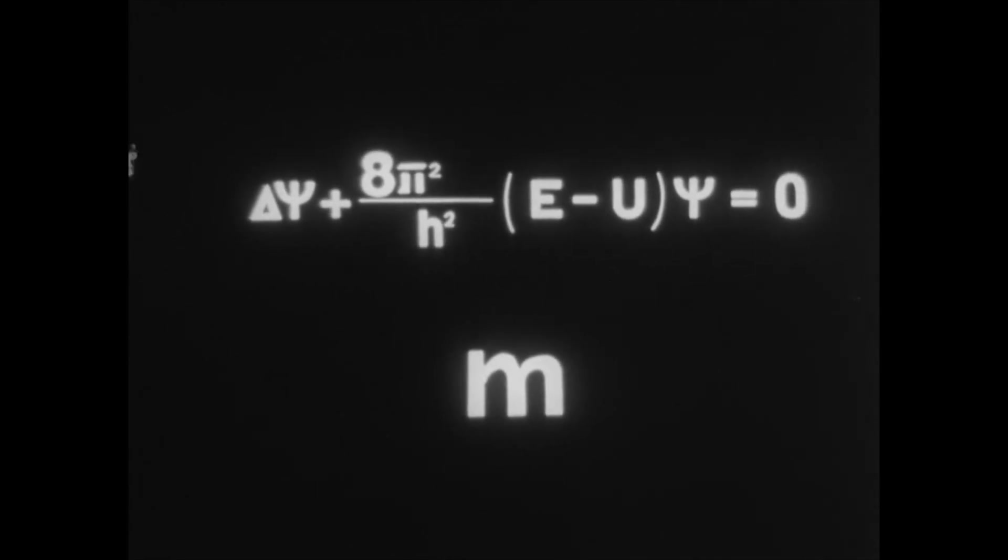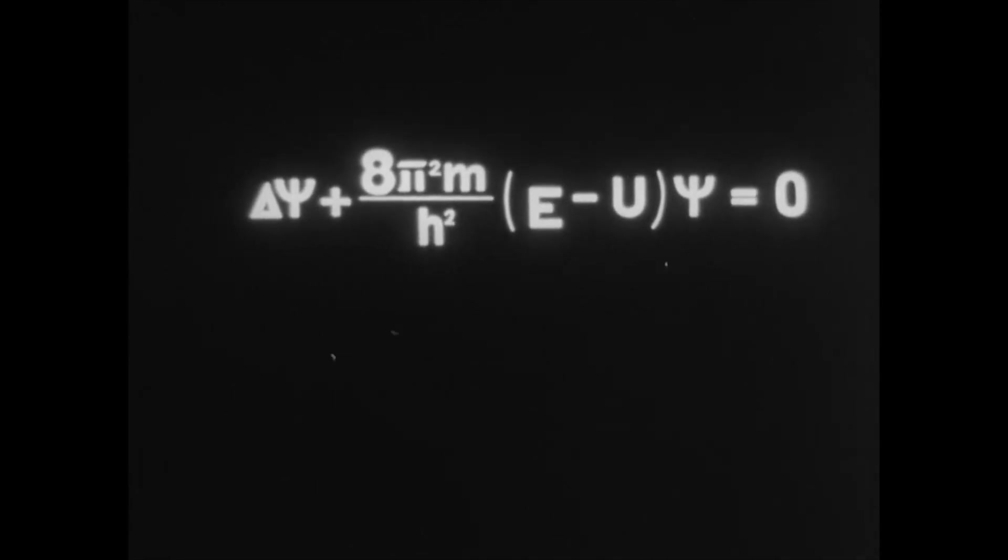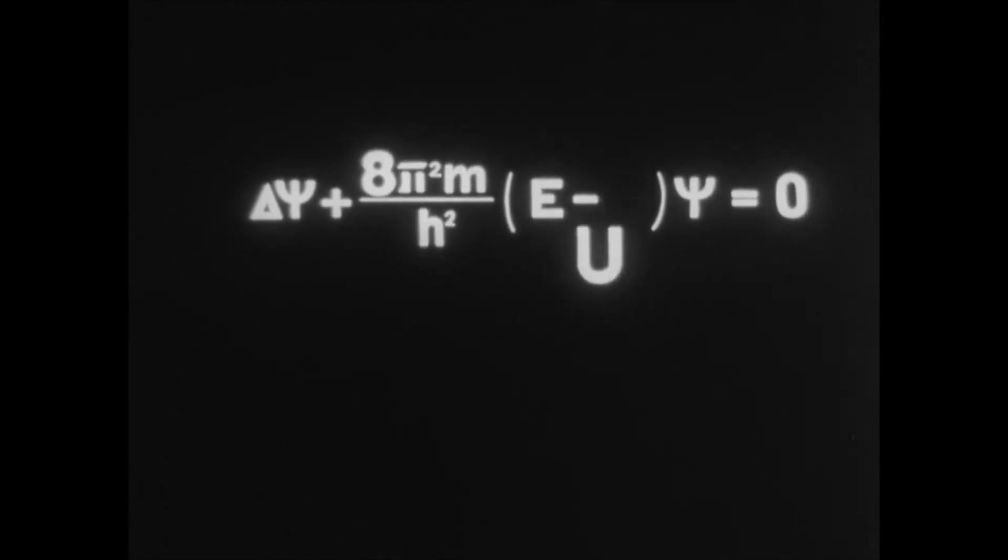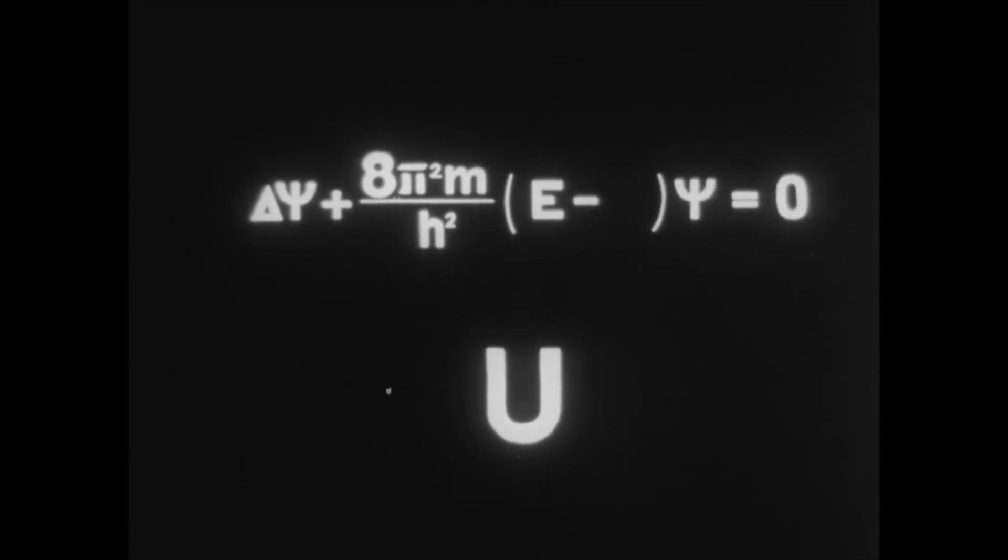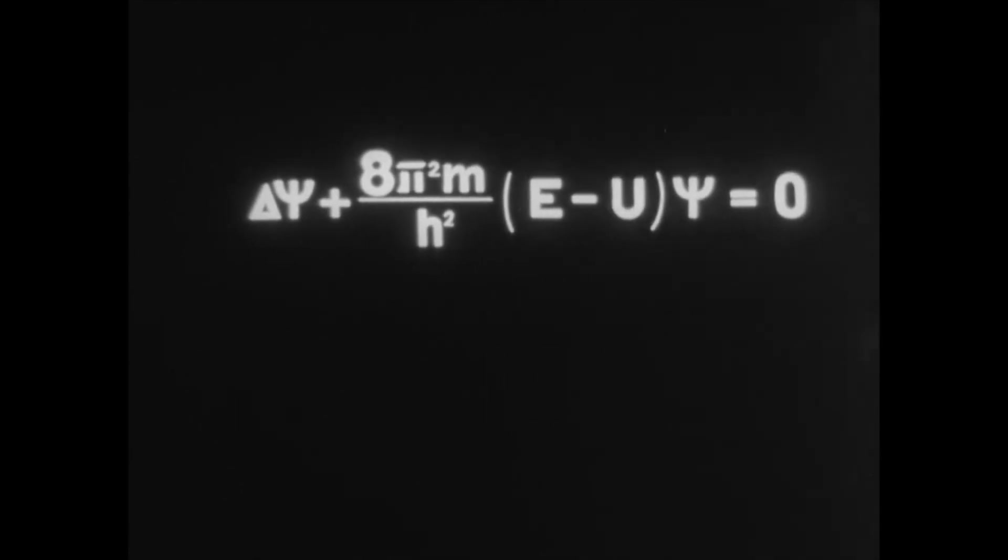M is the particle mass. E is the total energy of the particle. U is the potential energy.